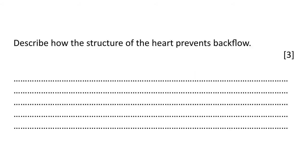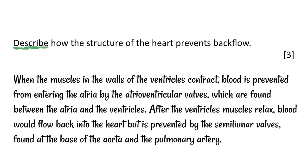Let's look at the way you might get assessed on this topic. You might be asked in an exam to describe how the structure of the heart prevents backflow. Always highlight the command word — in this case it's a describe question. A good answer would be: when the muscles of the ventricles contract, blood is prevented from entering the atria by the atrioventricular valves. There is probably a mark available for naming those valves, and another for saying where they are found — between the atria and the ventricles.